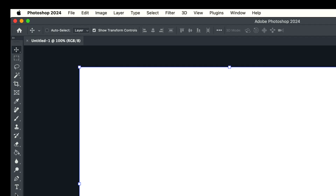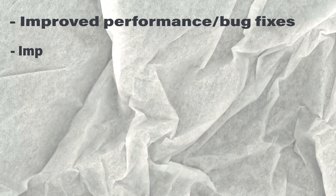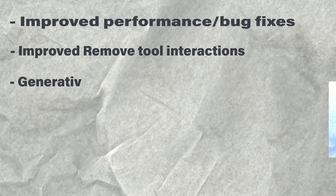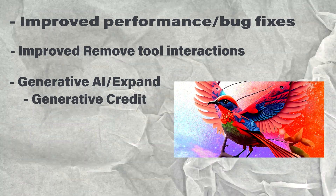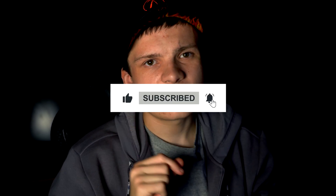We are now in Photoshop 2024. We'll cover the big thing towards the back end of the video. Photoshop version 25 doesn't have that many new features — the features it does have are: generative fill and expand, which is the new Adobe AI; generative credits in Photoshop; new interactions within the remove tool, which is a simple but very useful upgrade; and some general improvements to how Photoshop runs.